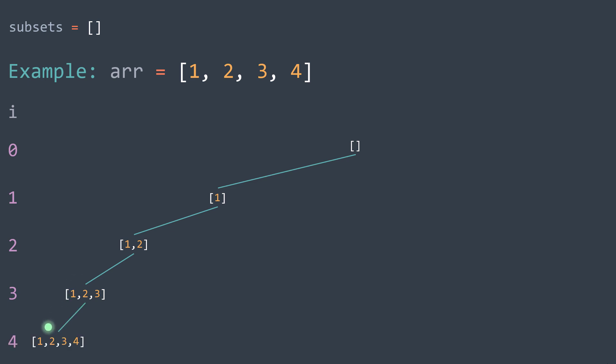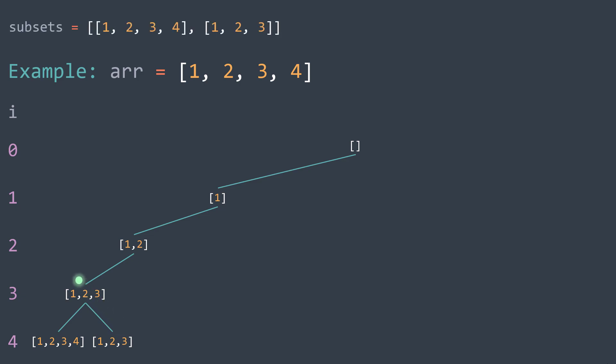Now i becomes equal to the length of the array, which means that we finished building our subset. We add it to our array of subsets and we backtrack — we go back to the previous call. We've seen the case where we take the last element, so we call the function again but by not taking it. We reach the base case, so we finish building a new subset, add it, and backtrack. Now we've seen both cases, so the job of this call is done and we backtrack.